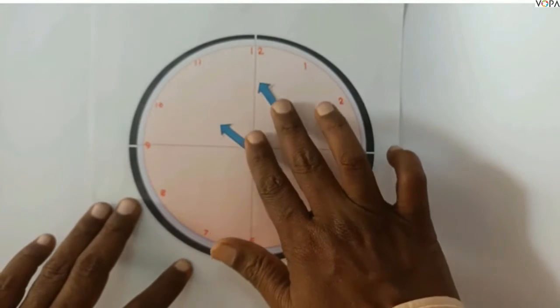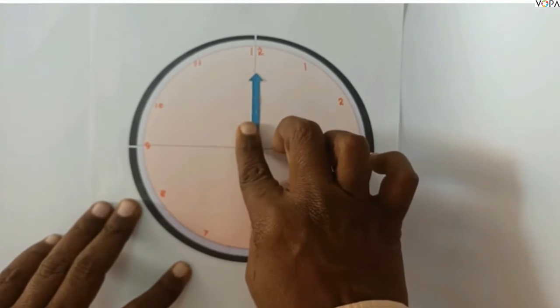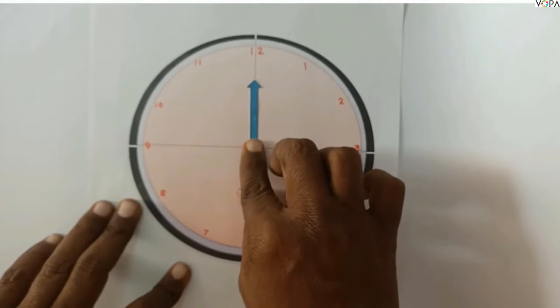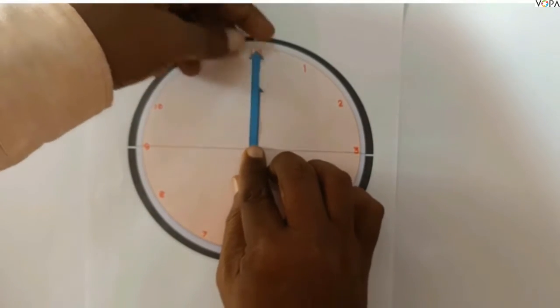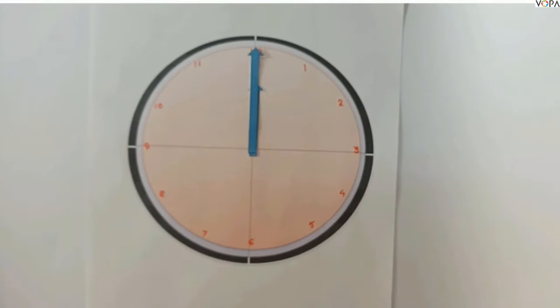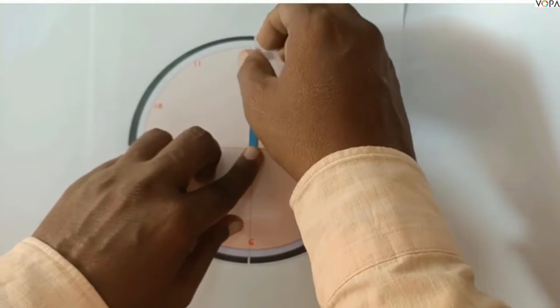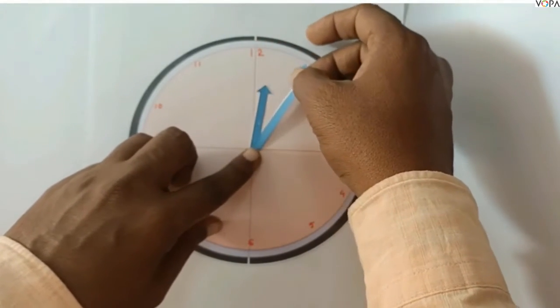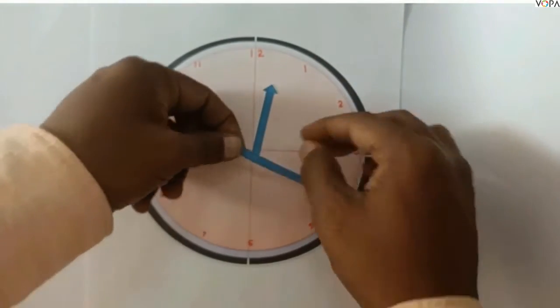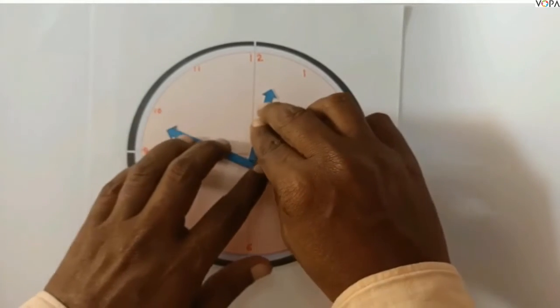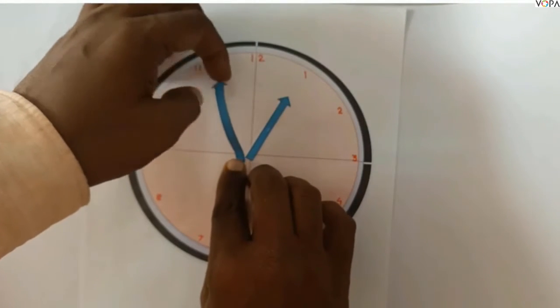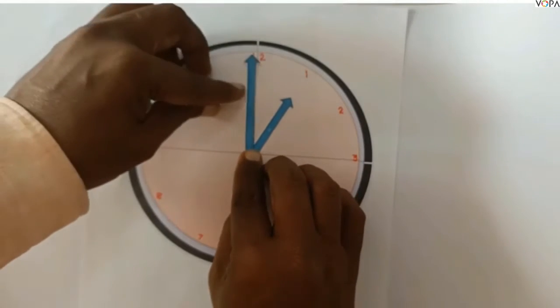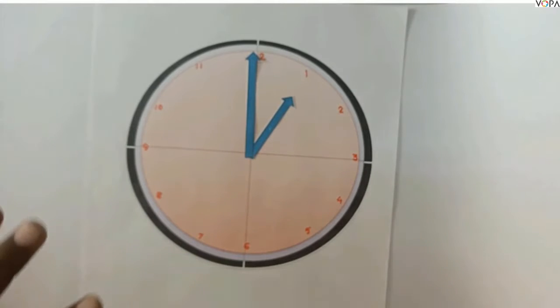See, if this short hand is on 12 and this long hand is also overlapping this one, it means it shows 12 o'clock. When this long hand moves for one time up to 12, at the same time slowly the short hand moves to the next figure, that is one. And when this long hand goes to 12 and short hand goes to one, it means this is 1 o'clock.